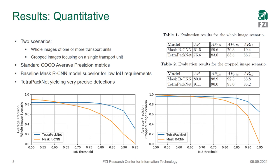We trained TETRAPACnet and the baseline model Mask R-CNN on two scenarios. In the first scenario, we took the whole images and trained both models on them, and in the second scenario we took cropped images each showing exactly one logistic transport unit. To evaluate both models, we used standard COCO average precision metrics. The results show that when we require low intersection-over-union thresholds, Mask R-CNN performs better than TETRAPACnet, but when we increase the IoU threshold — requiring very precise detections and high accuracy for corner locations — TETRAPACnet performs much better than Mask R-CNN.